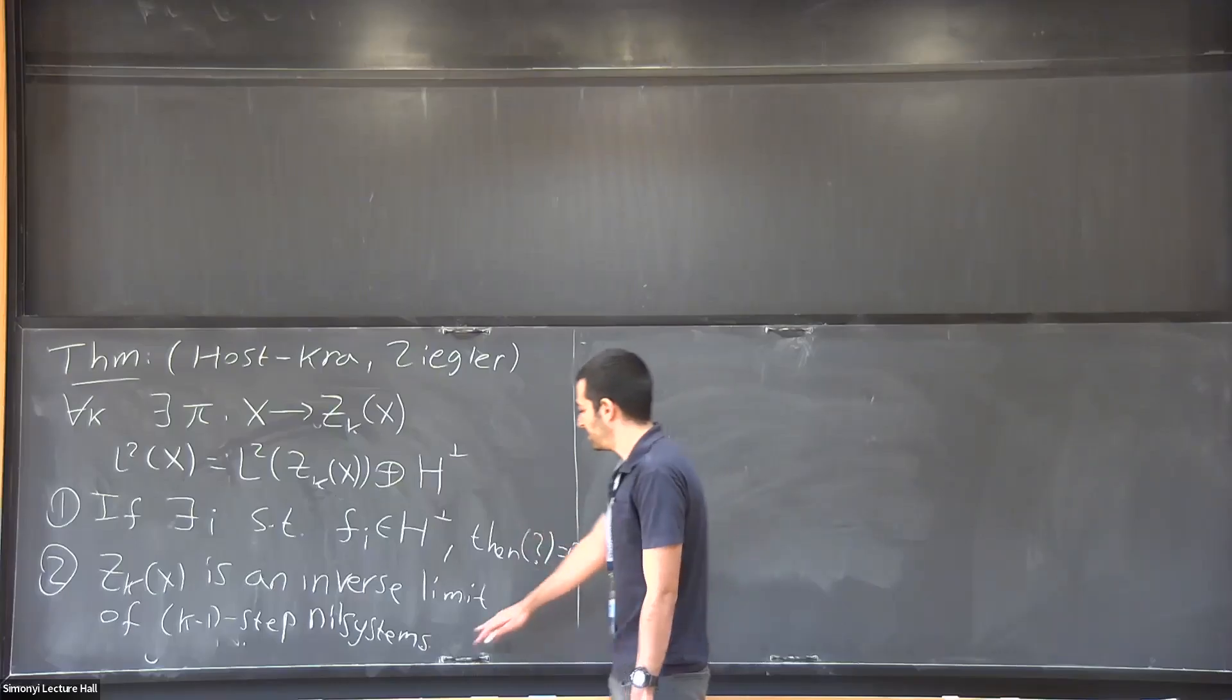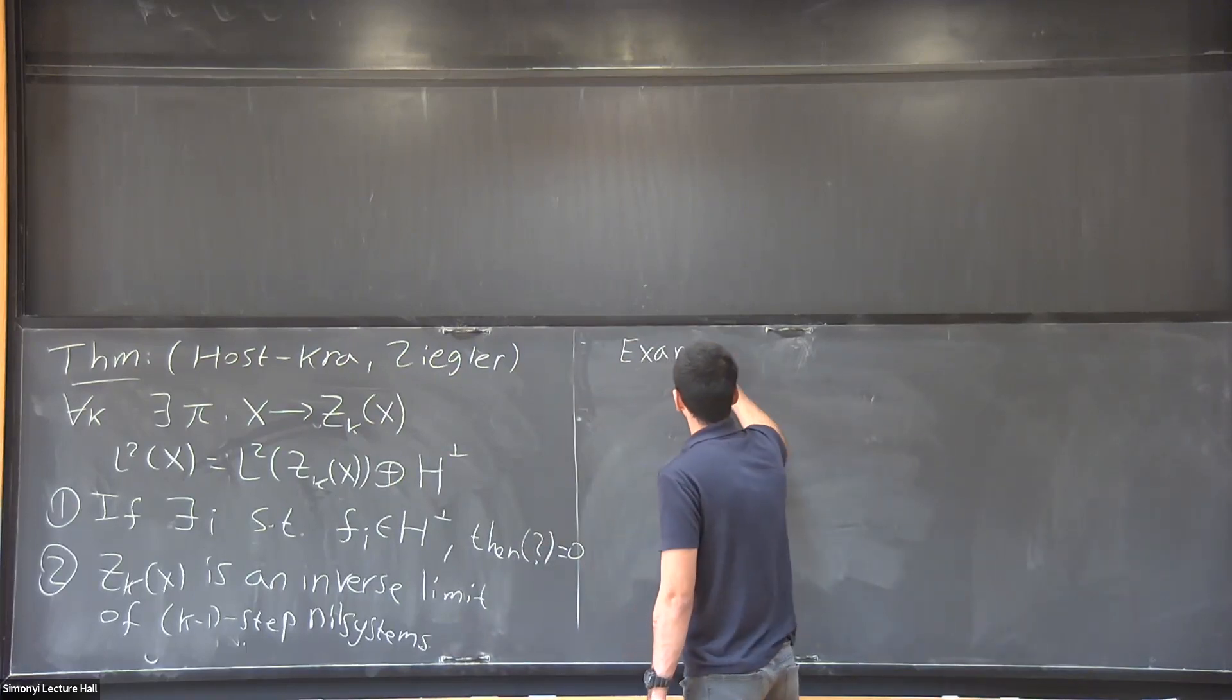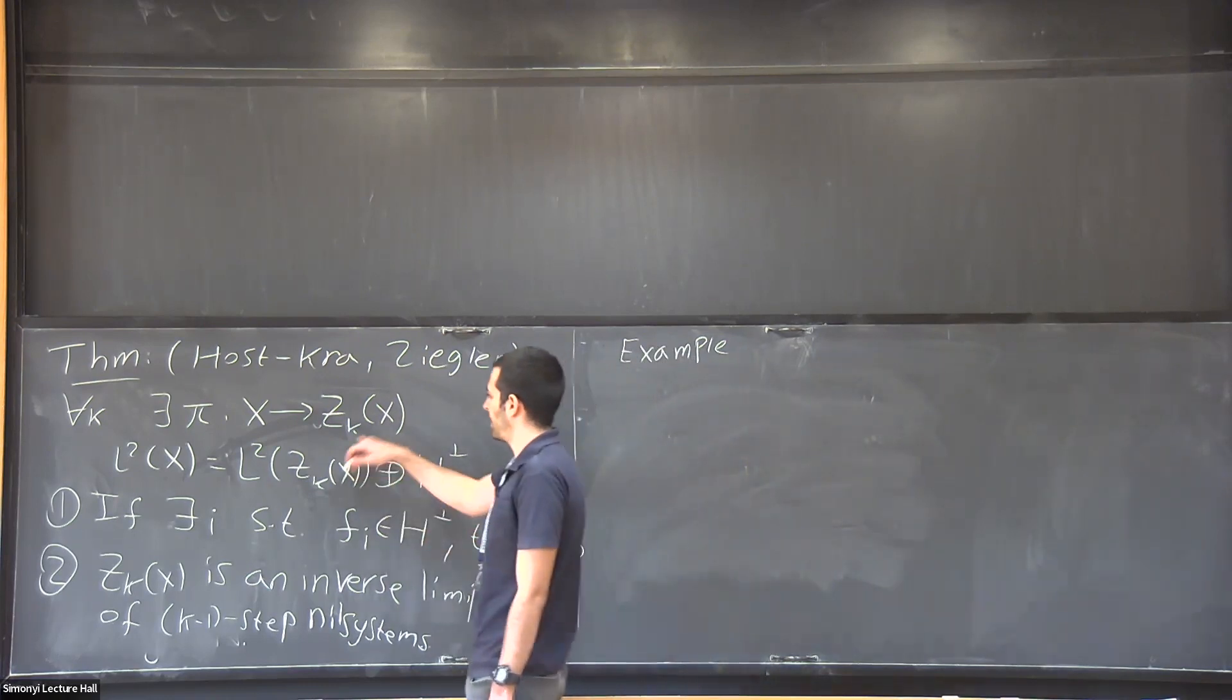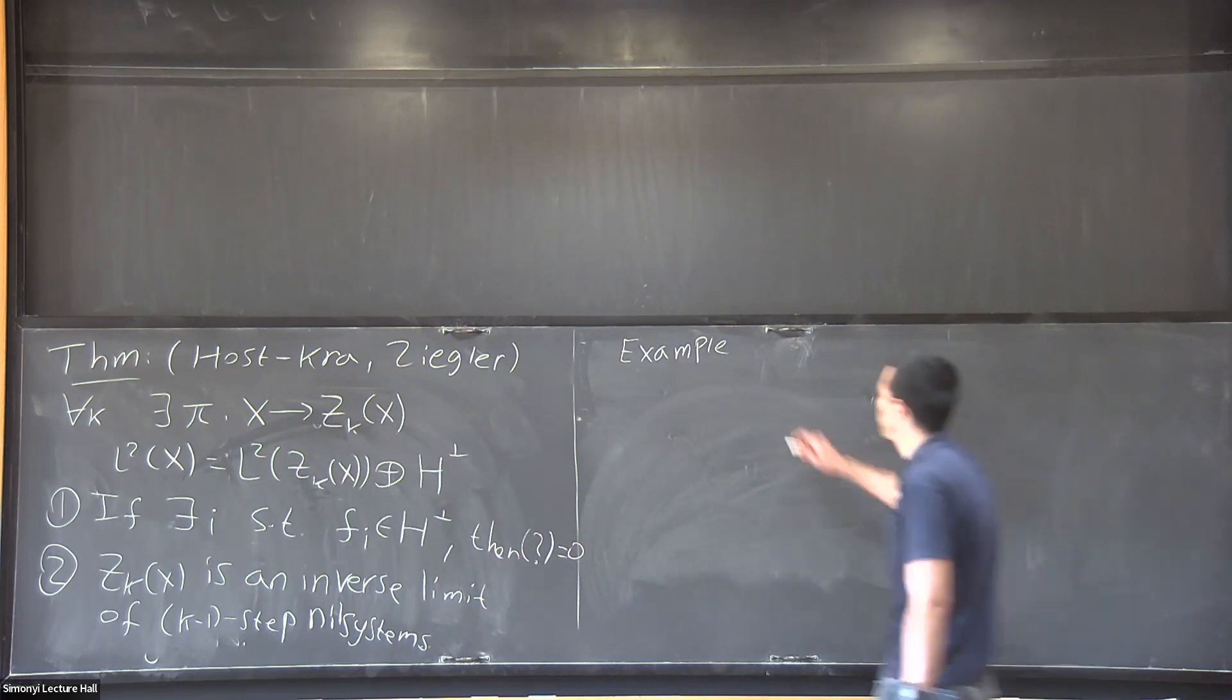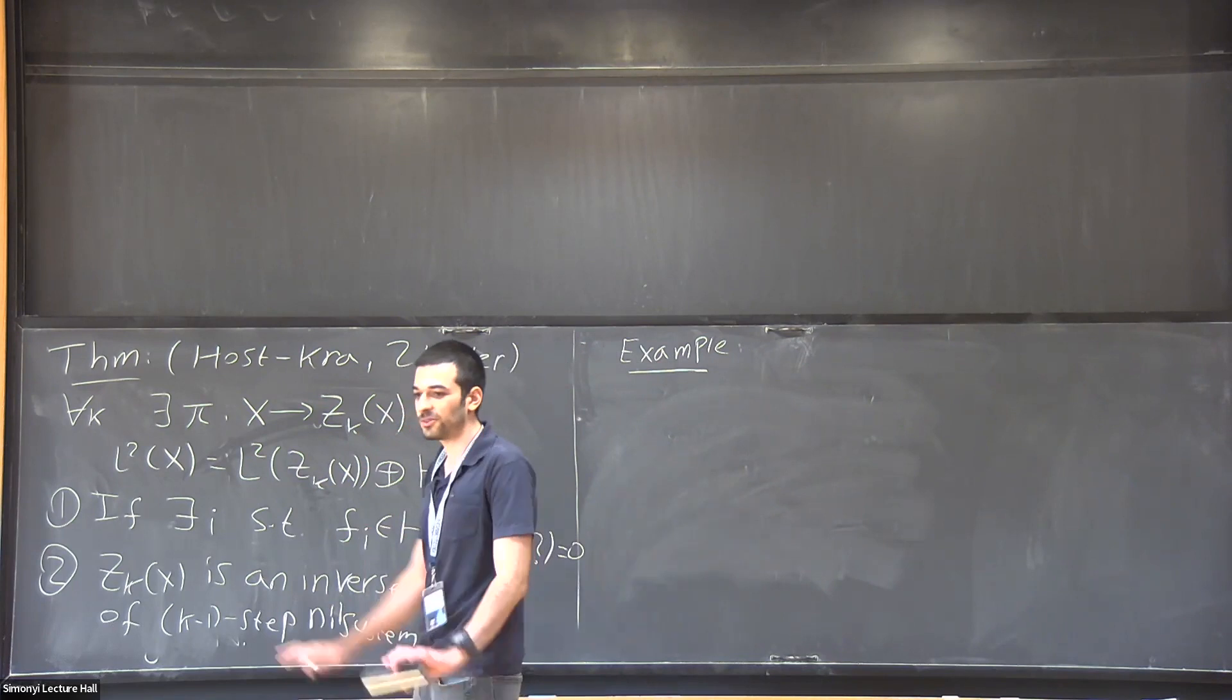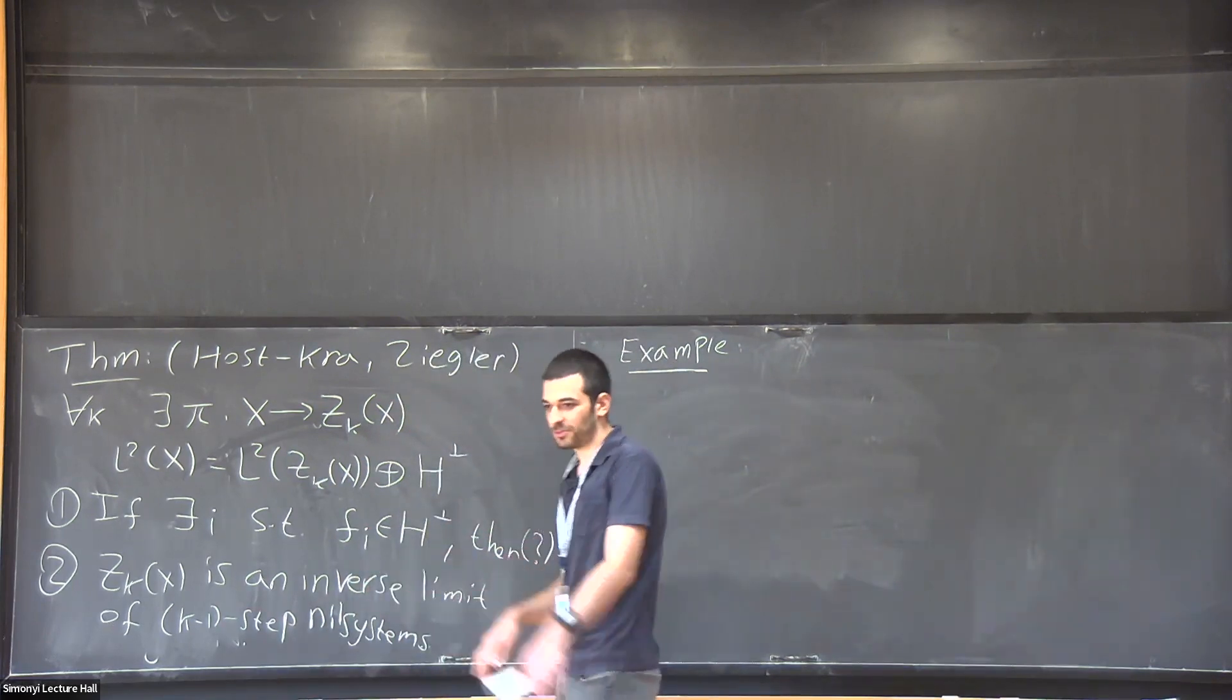So instead of defining what a nilsystem is, I want to give a nice example, a very classical one. So it depends on k and X. Yeah, yeah. No, no, X of course, but it doesn't depend upon f1 to fk. No. So it works for all functions. And T is an ergodic transformation? So yeah, so I'm going to assume that it's ergodic. Yeah, let's assume it's ergodic.